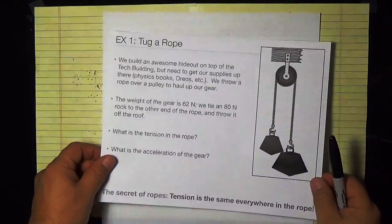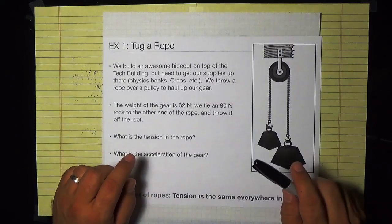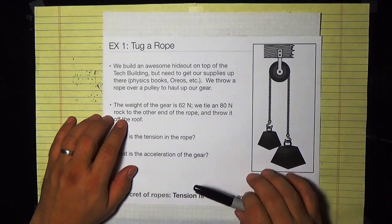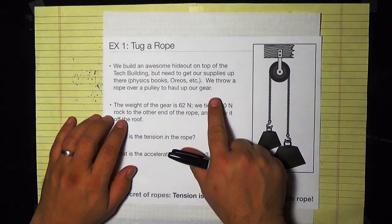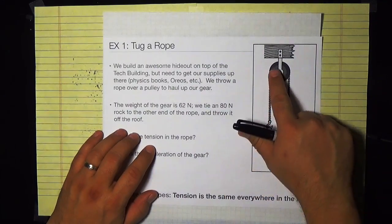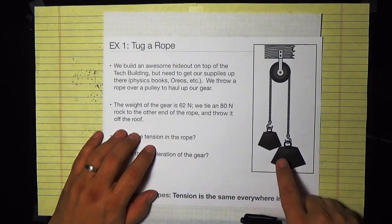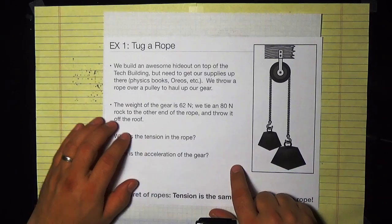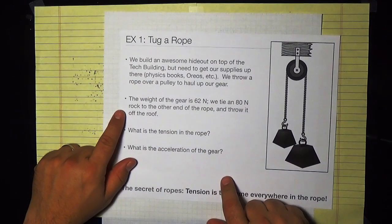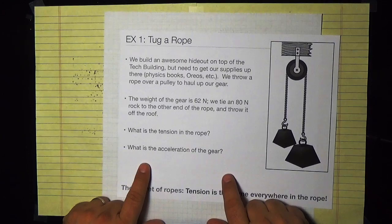Here's the first problem. Let's imagine we built a tree fort on top of the physics building and want to get some gear up there — physics books, Oreos, popsicles. We'll tie the gear onto a rope, run it over a pulley, and tie a very large mass to the other end. We throw that mass off, it falls, and pulls the gear up. The gear weighs 62 newtons, the rock weighs 80 newtons. We want to find the tension in the rope and the acceleration of the gear.